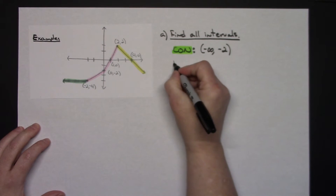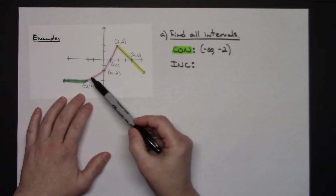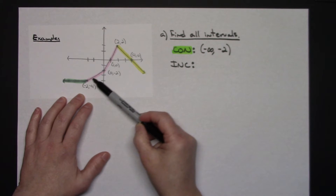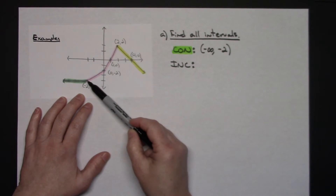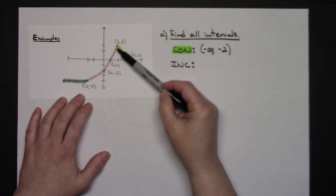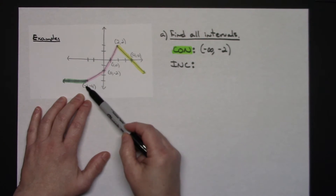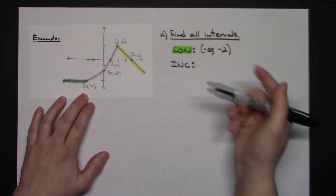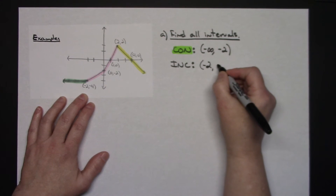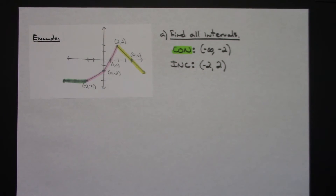Next is the increasing section. Even though there are specific points along it, the graph is increasing throughout that whole connected section. So I only need the farthest left x value, which is negative two, and the farthest right x value, which is positive two. Making sure you take the values from the x-axis: the increasing interval is negative two to positive two.